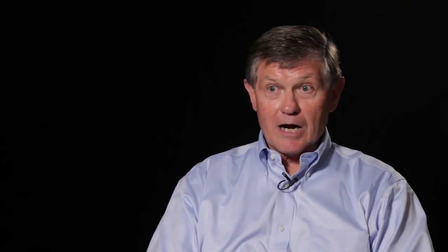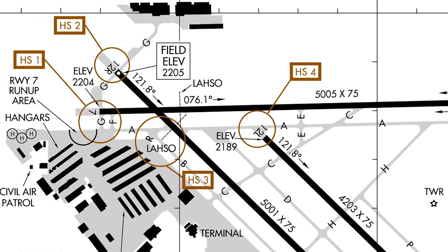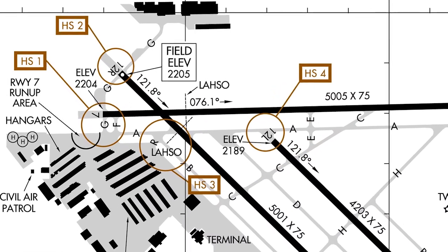Learning those local procedures at non-towered airports can help you flow a little bit better with the traffic. Talking to the local FBO gives you insight into the common taxi routes and helps you integrate smoothly with other aircraft operating at that airport.